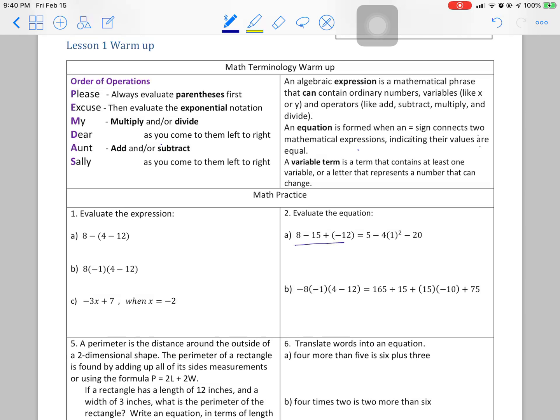A variable term is a term that contains at least one variable, and a variable is a letter that represents a number that can change. This here, that's a variable term. This X is the variable. It's the letter that stands for whatever number we decide it stands for. When you do substitution problems, they'll tell you what to put in for X.